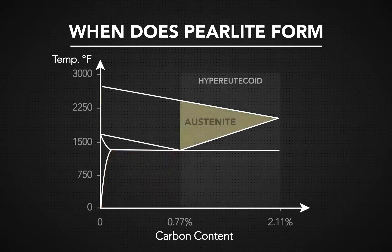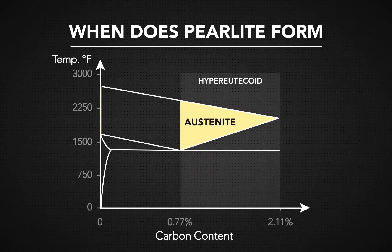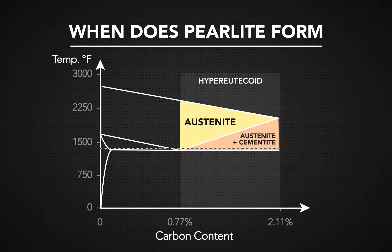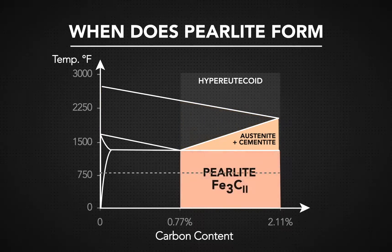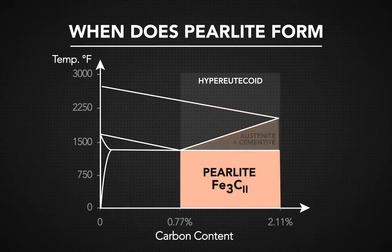Hyper-eutectoid steels have more carbon content, so cementite makes austenite grain boundaries at the start of the cooling process. When steel dips below the eutectic temperature, the last parts of austenite will change to perlite, creating a mixture of perlite and cementite.